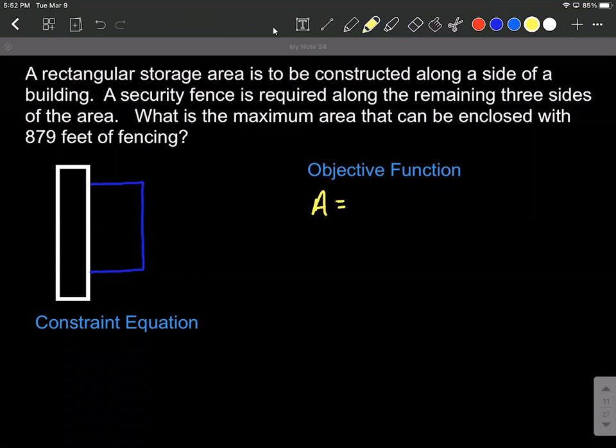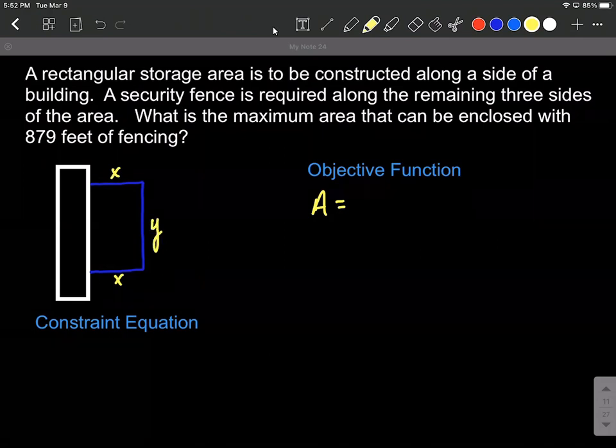Let's go ahead and label our sides of our rectangle. We're going to need fencing along the bottom and along the top, and those are going to be the same because this is a rectangle. Then we need length of fencing going vertically just on one side. I'm using X's and Y's. You can choose whichever letters you like - lengths and widths, L's and W's is fine too.